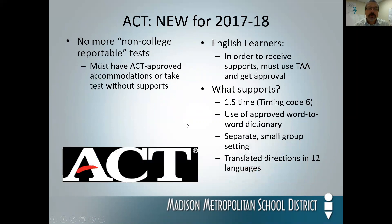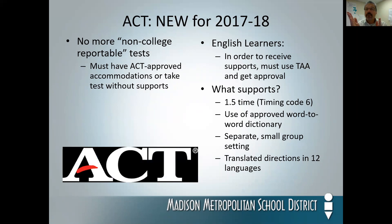New item for this year: there will be no more non-college reportable tests. What happened in the past was that if a student did not get accepted for ACT-approved accommodations, they could take an accommodated test that was non-college reportable. That will not be the case this year. Students will either have ACT accommodations approved by ACT, or they will be taking the standard test in standard time without any other supports or accommodations. Those are the two choices — you have accommodations or you don't.